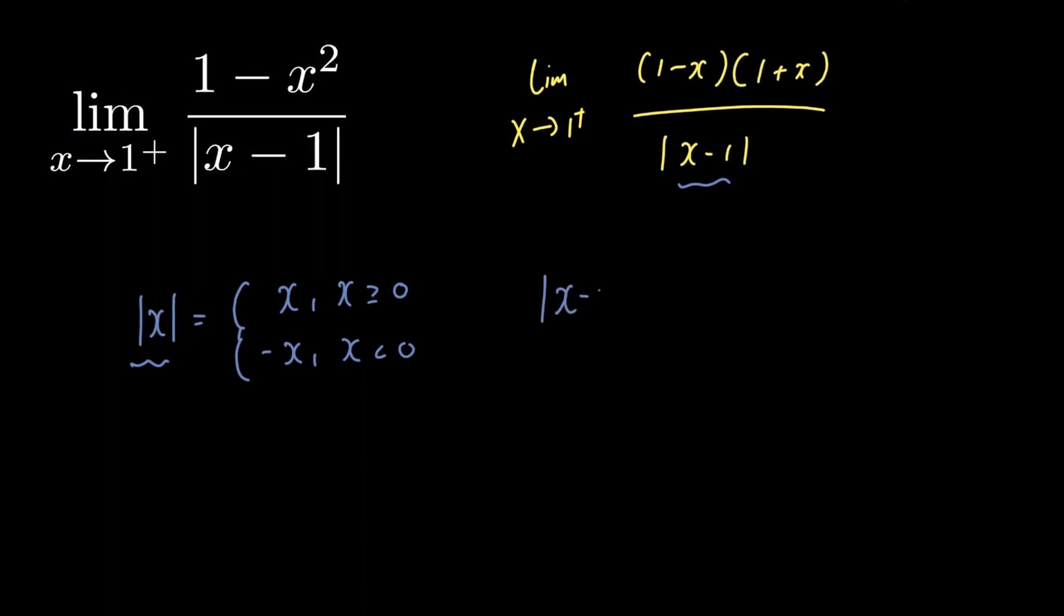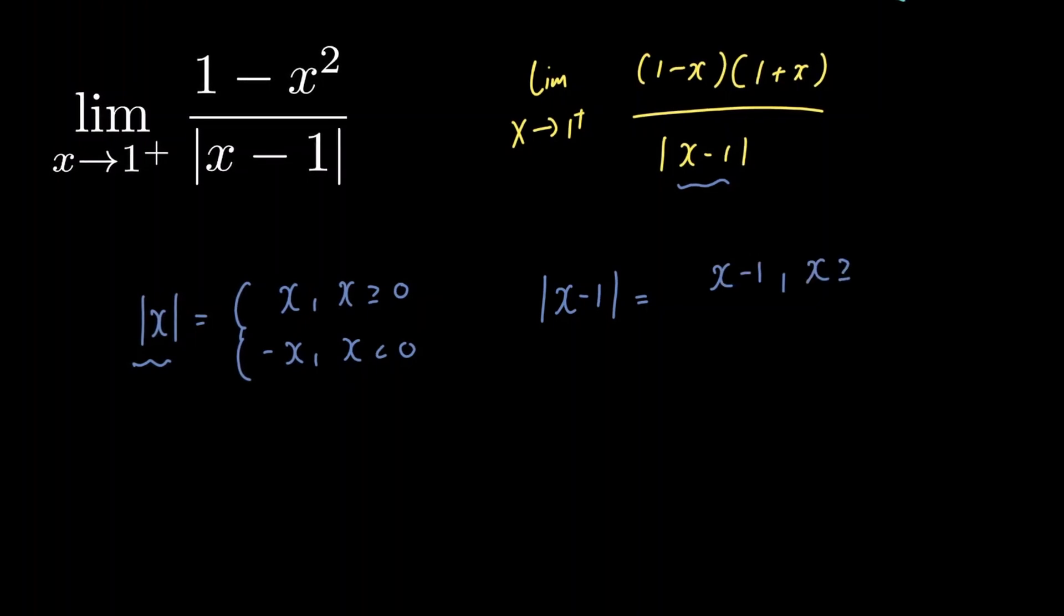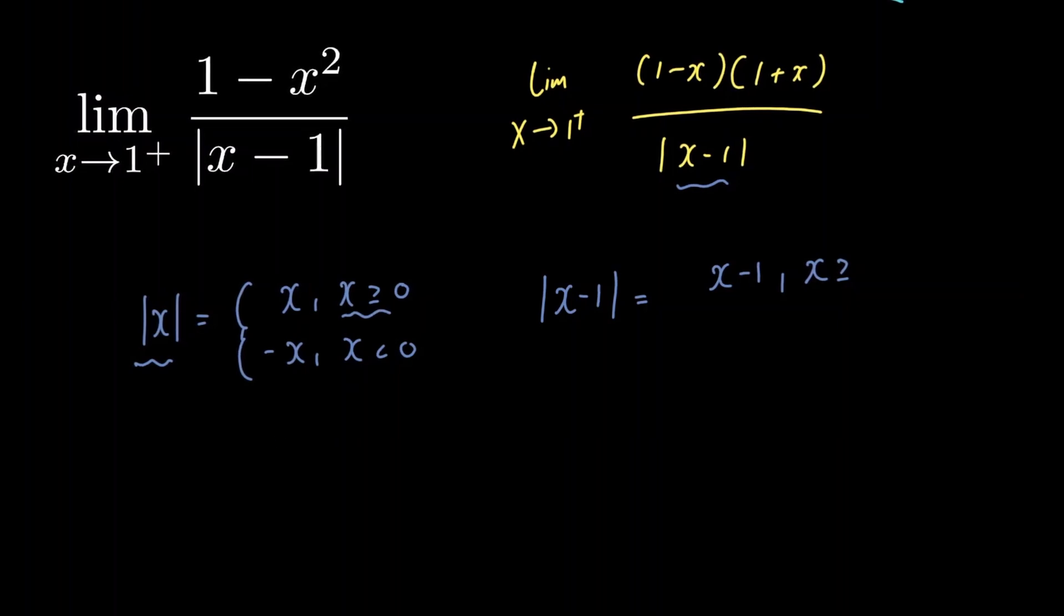We have the absolute value of x minus 1 is equal to x minus 1 if x is greater than or equal to what? Right here we had x greater than or equal to 0. So let's think about this. Now we have x minus 1 greater than or equal to 0.